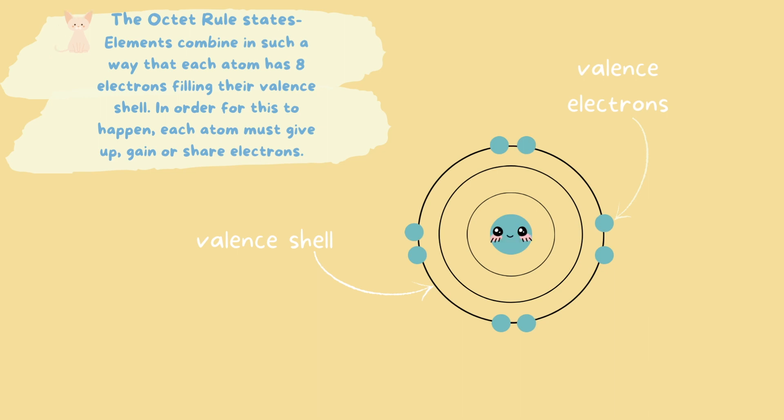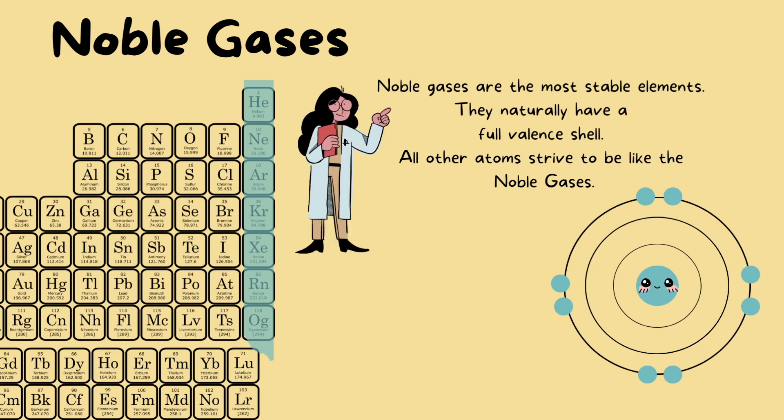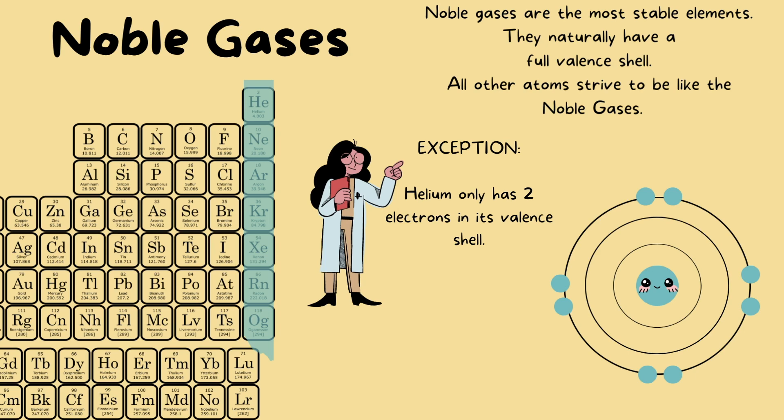Eight electrons filling up the valence shell is going to make these atoms very happy. The elements highlighted here are our noble gases, and all elements strive to become like the noble gases. Noble gases are the most stable elements because they naturally have a full valence shell — naturally have eight electrons filling up their valence shell — with one exception. That exception is helium. It only has two electrons in its valence shell, and it is perfectly fine with only having two.